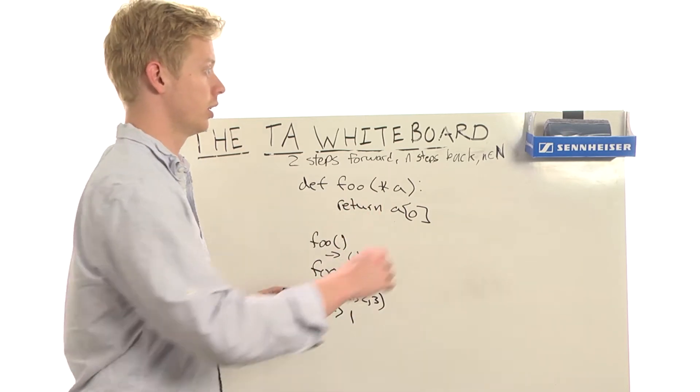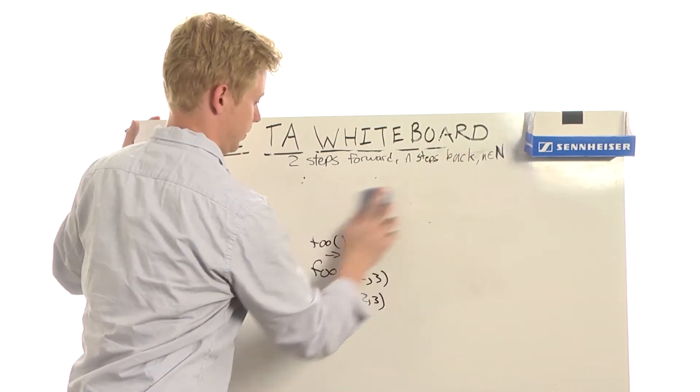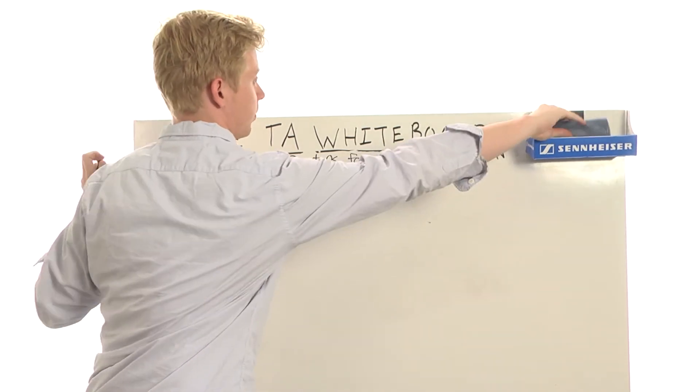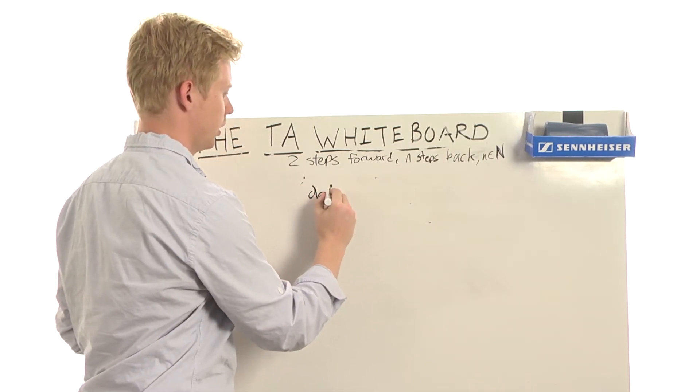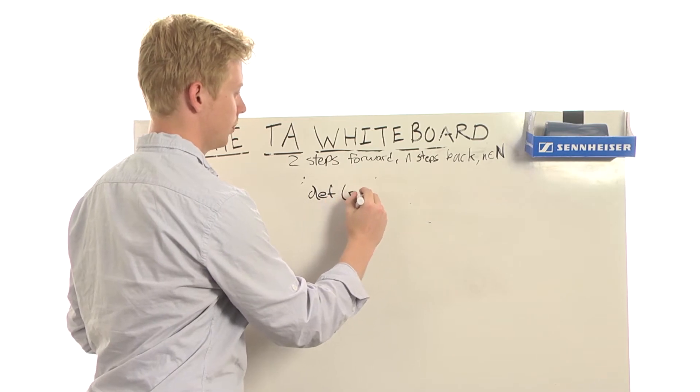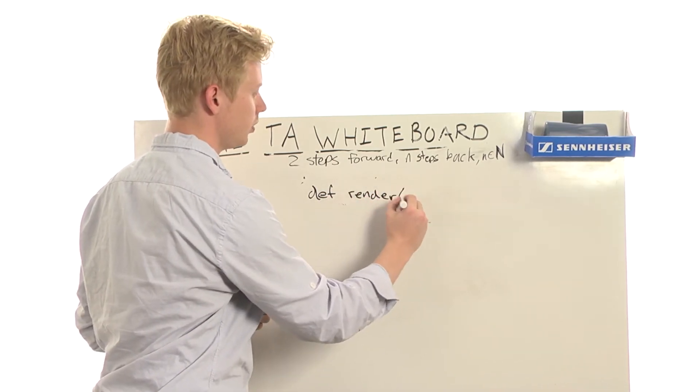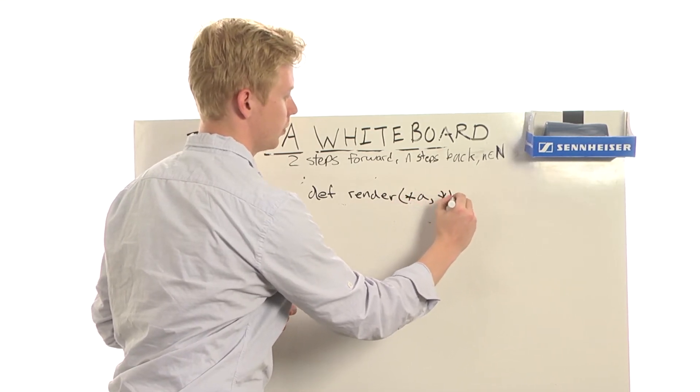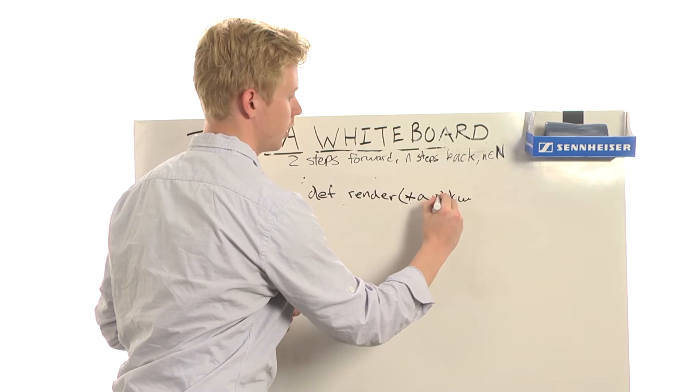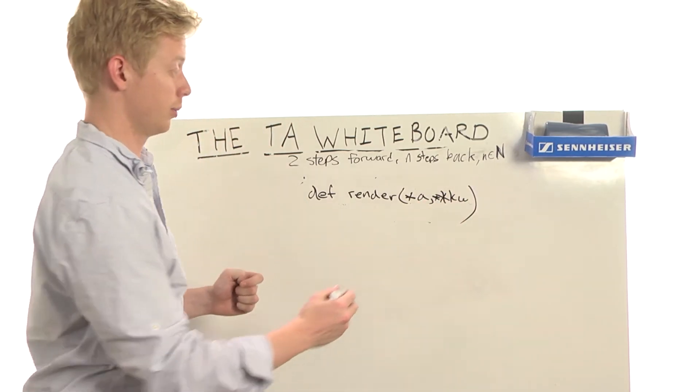Now, something you've seen in my code looks something like this. I often have a function. I think in my code I have something that's like this. Def render. And it may take star a and star star kw. Two stars. In Sketchpad, they edit all these mistakes out.